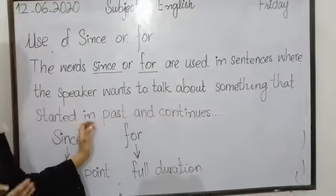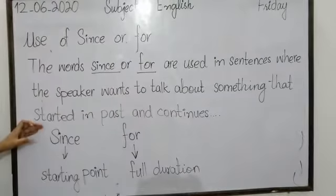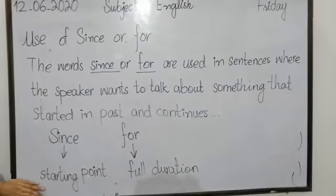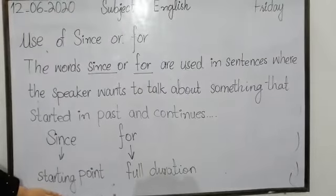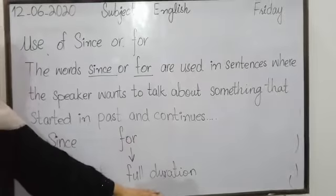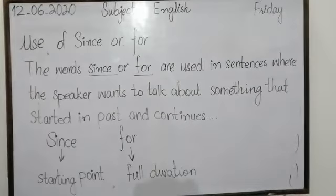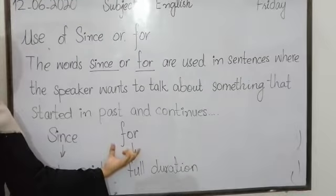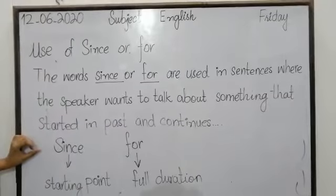The starting point is in the past, but the action still continues. We use 'since' when the starting point is a specific time. In the same way, 'for' describes the full duration — when the work starts and how long it lasts. Here, let me show some examples for better understanding.